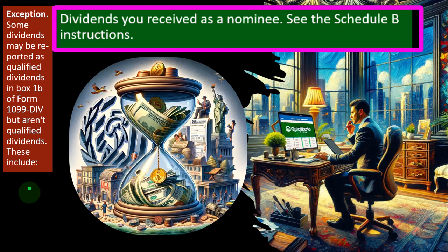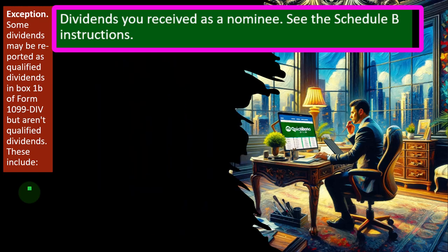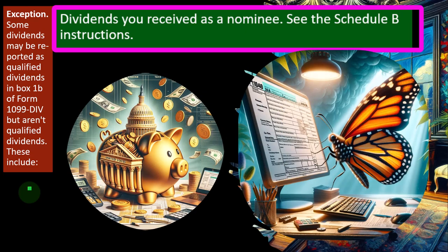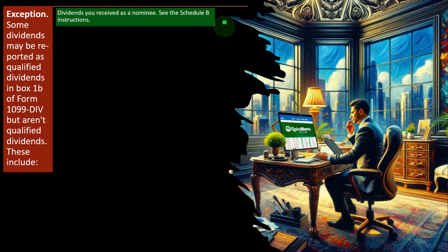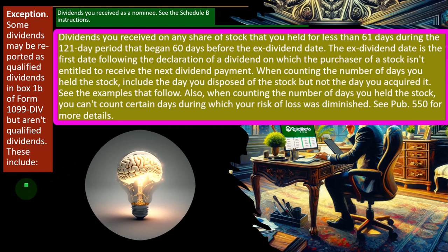Some dividends may be reported as qualified in box 1B of Form 1099-DIV but aren't actually qualified. These include dividends received as a nominee — similar to the interest situation — where the 1099 goes to you and to the IRS. If some of that dividend income shouldn't be applicable to you, you still have to report it on your tax return. Otherwise the IRS computer will match up the two numbers and you'll likely have a problem. You'd need to report it on Schedule B and then show a subtraction.